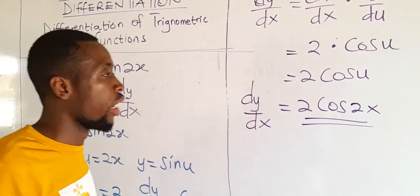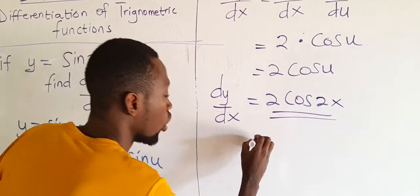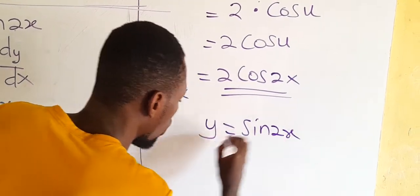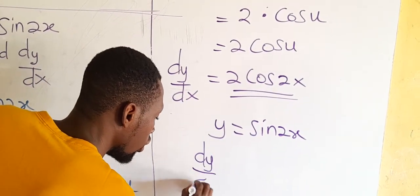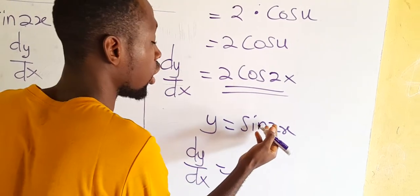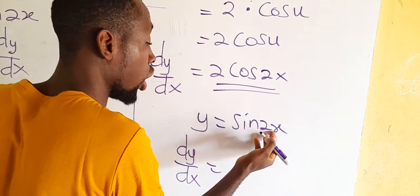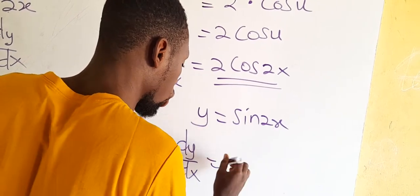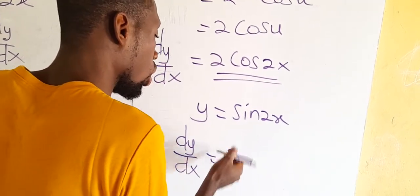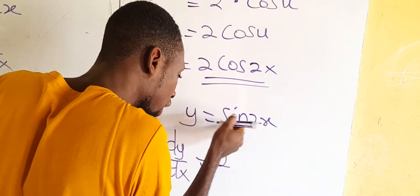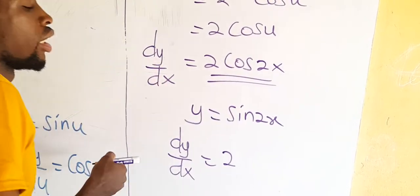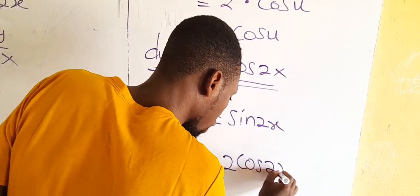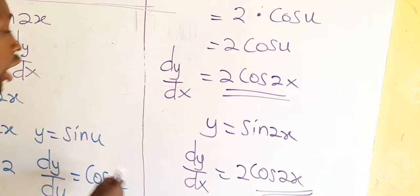Let me show you how to do it directly. Remember y equals sin 2x. So dy/dx: differentiate the angle 2x to get 2, then differentiate sin to get cos, then repeat what is there — giving 2 cos 2x. Very simple. Now let me do another one using the direct method.